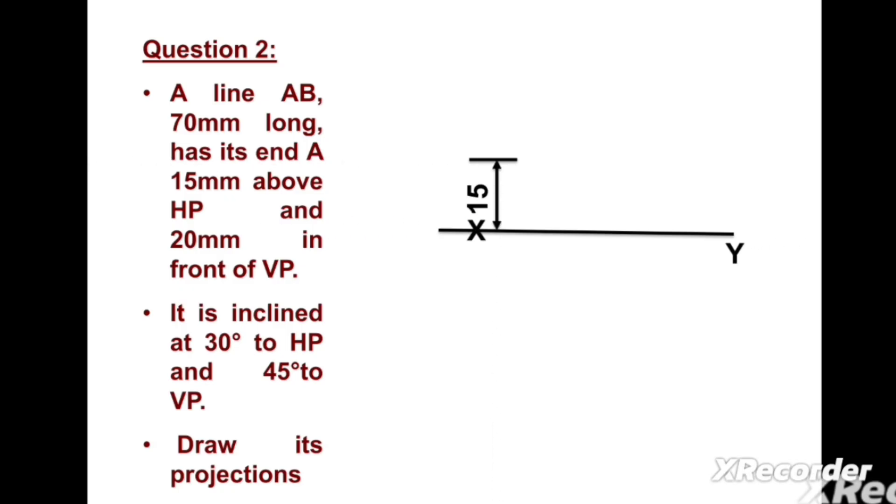Above this XY line we can mark point a' at 15mm distance. Below this XY line, at 2 centimeter distance, we can mark point a at 20mm distance. Now we can draw a horizontal line passing from a'. Consider this angle theta equal to 30 degrees.